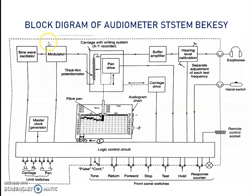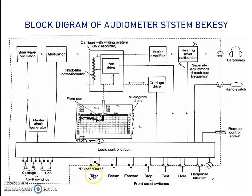Now we will discuss how this audiometer works. The sine wave oscillator generates the test signal in the range of 125 Hz to 8000 Hz. The test signal is first provided to the left ear and then the right ear. From the oscillator, the signal is fed to the modulator where the mode of operation is selected via a tone switch. Two modes are available: pulse and continuous.